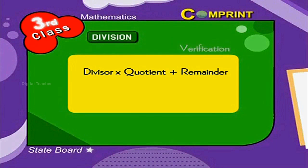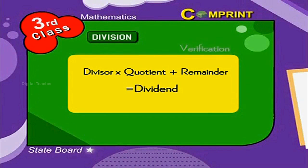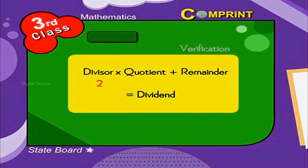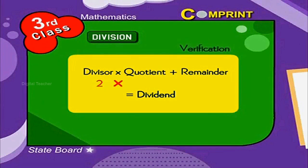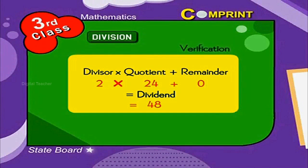Here, 2 into 24 plus 0 is equal to 48, which is the dividend.